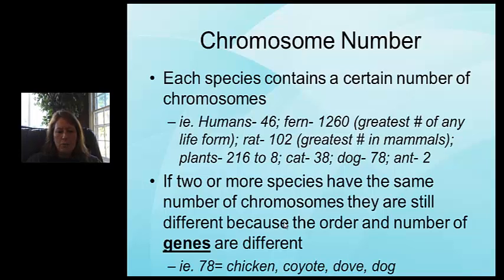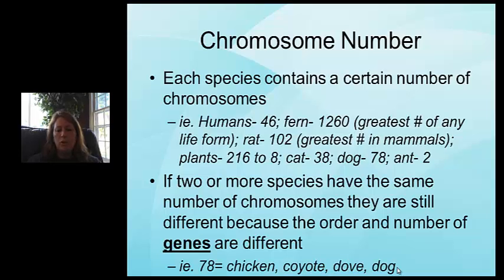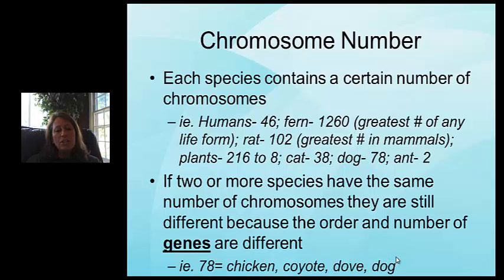If two or more species have the same chromosome number, they are still different organisms because of how genes are arranged. For example, the number 78 applies to dogs, chickens, coyotes, and doves — completely different organisms because their genes are arranged in a different order. There is a myth that organisms with the same number of chromosomes can breed, but that's not always the case. If species are close enough and gene arrangement is similar, they could potentially be bred.